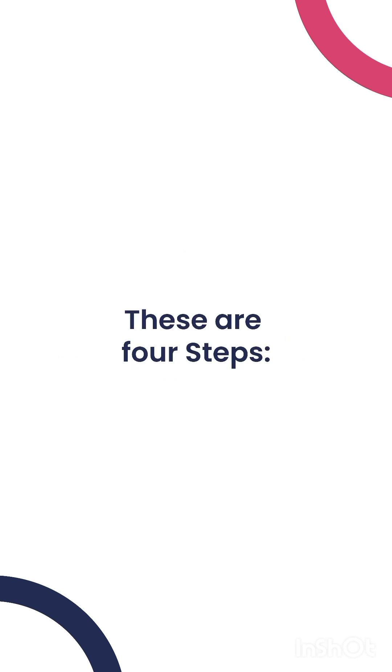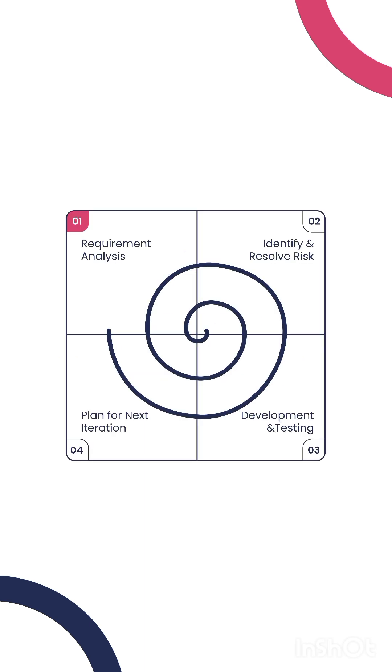These are the four steps. Requirement Analysis: Just like mapping out the path of our journey, in the spiral model, you plan what you will develop.